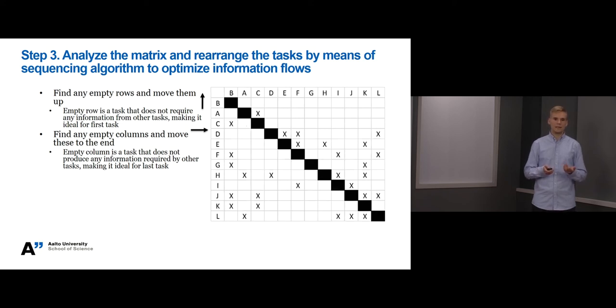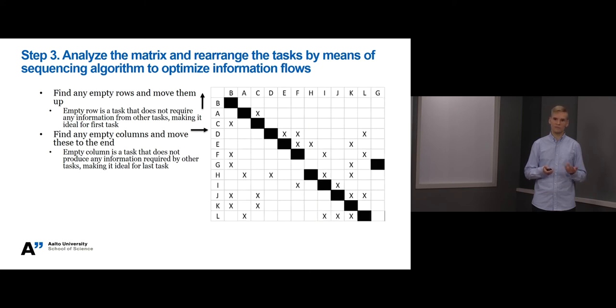What we can see is that task G produces no information to other tasks. So let's move it to the end. Please remember to always move the respective row as well so that the diagonal follows correctly. Alright, so now we need to sort out the rest of the tasks to optimize information flows. In general, the idea is to move the columns and respective rows so that the cross marks will be below the diagonal or as close to the diagonal as possible.